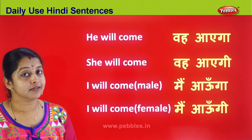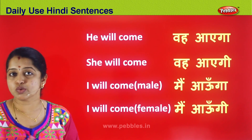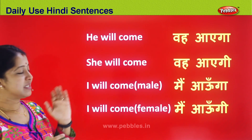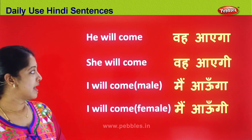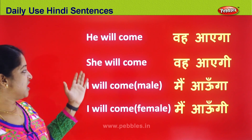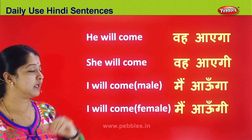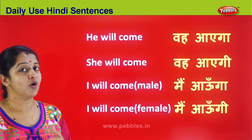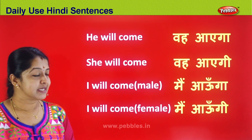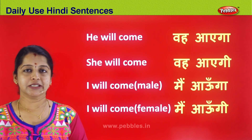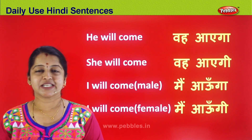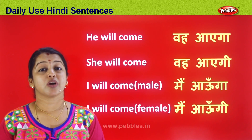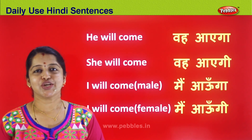Similarly, for elders or formal conversation, use the appropriate form; for informal conversation, chat freely with friends. Recap: 'he will come' = Vah Ayega; 'she will come' = Vah Ayegi; 'I will come' (boy) = Main Aonga; 'I will come' (girl) = Main Aongi. I hope all these tips and strategies will be useful for you to practice smoothly and communicate in Hindi at ease. See you all in the next part.